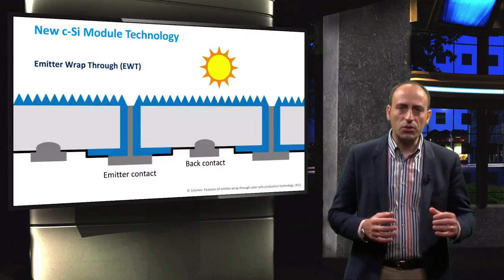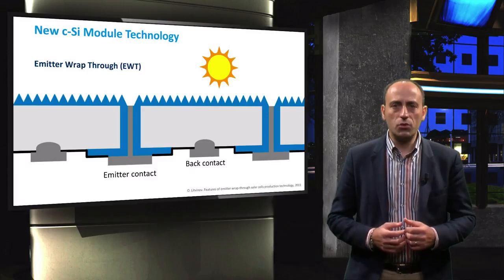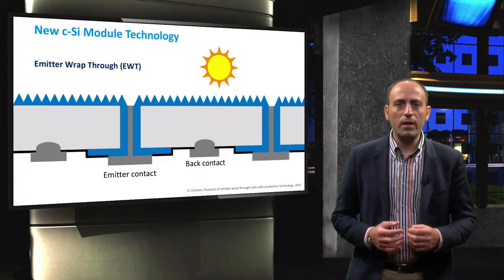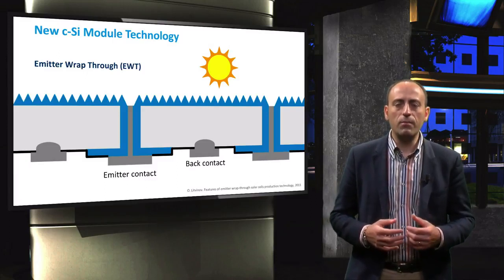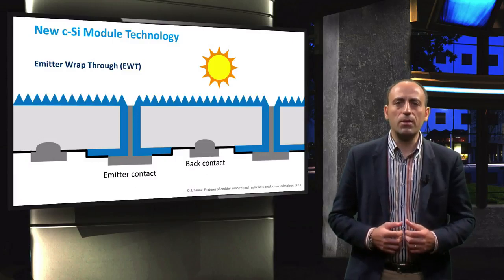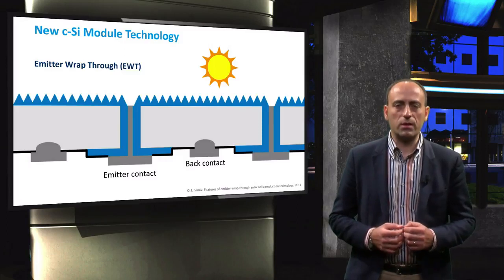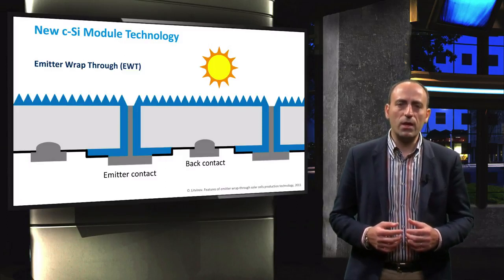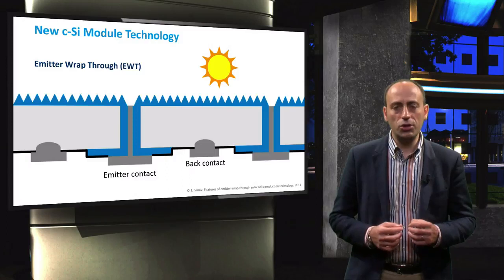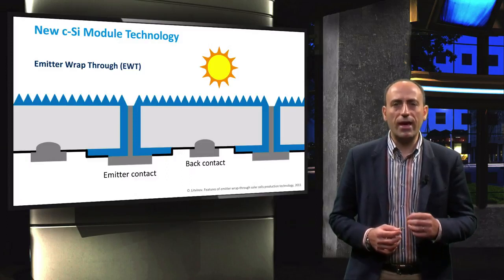Here you can see the cross-sectional view of the emitter wrapped through solar cell configuration. We can gather from the figure that the main advantage of this concept is the almost total absence of metal grids at the front surface of the solar cells. This solar cell design, therefore, has very limited shading losses and a larger active area.